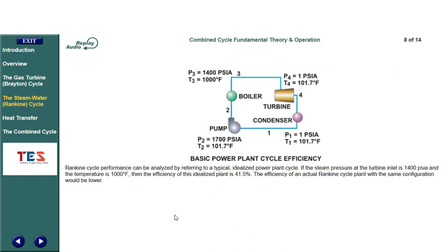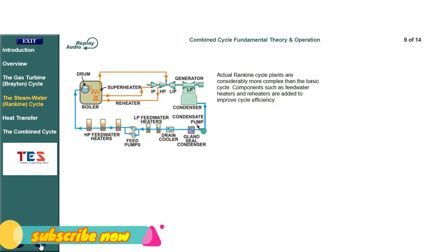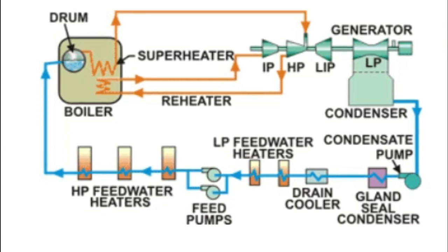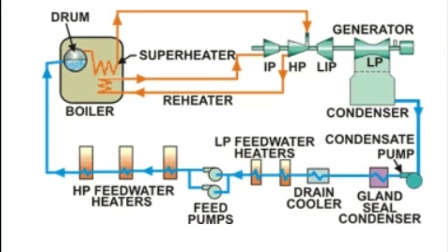Rankine cycle performance can be analyzed by referring to a typical idealized power plant cycle. If the steam pressure at the turbine inlet is 1400 PSIA and the temperature is 1000 degrees Fahrenheit, then the efficiency of this idealized plant is 41.5%. The efficiency of an actual Rankine cycle plant with the same configuration would be lower. Actual Rankine cycle plants are considerably more complex than the basic cycle.